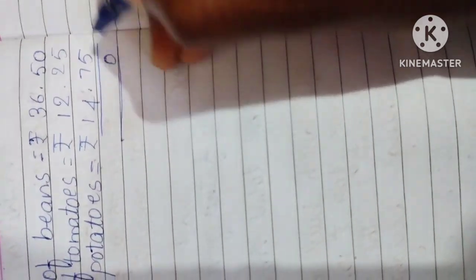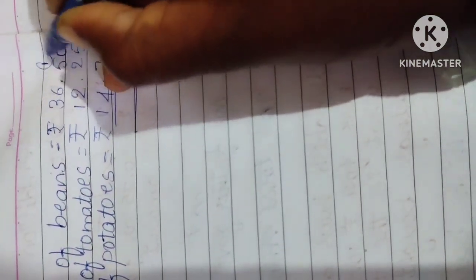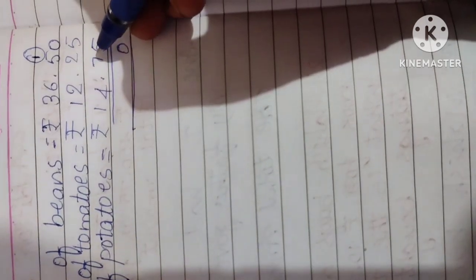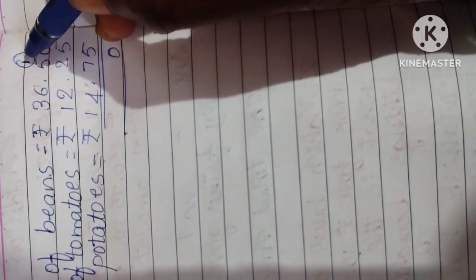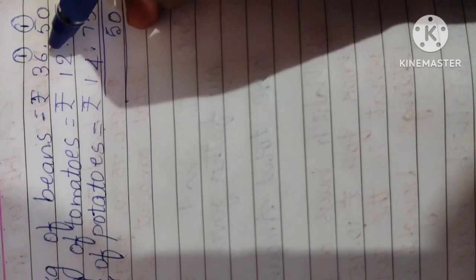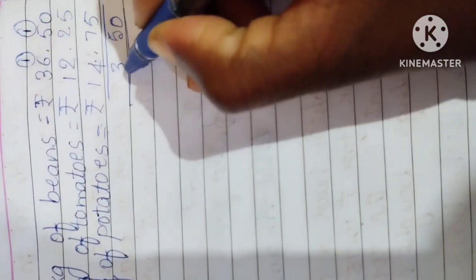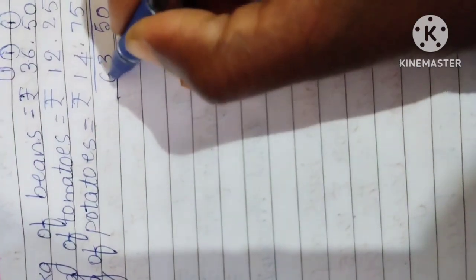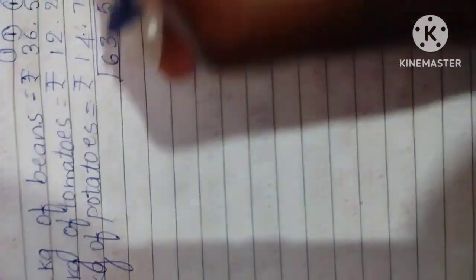5 plus 5 is 10, 1 goes to carry. Now, 7 plus 2 is 9, 9 plus 1 is 10, 10 plus 5 is 15. 1 goes to carry. 1 plus 6 is 7, 7 plus 2 is 9, 9 plus 4 is 13. 1 goes to carry. Now, 1 plus 3 is 4, 4 plus 1 is 5, 5 plus 1 is 6. So, what is the total amount she needs to pay?